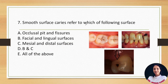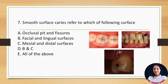Smooth surface caries refer to which surface? A. Occlusal pit and fissure, B. Facial and lingual surfaces, C. Mesial and distal surfaces, D. Both B and C, E. All of the above. Occlusal surfaces have pits, fissures, and grooves, so Class 1 caries are pit and fissure caries. The facial, lingual, mesial, and distal surfaces are free from grooves, pits, and fissures, so caries on these surfaces are known as smooth surface caries. The answer is D — both B and C.